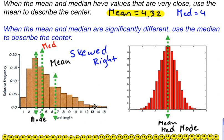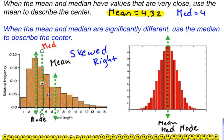If this was all flipped around, the mean would get pulled way over to the left if the tail was on the left. So when the mean and the median have values that are very close, that tells us our distribution is probably bell-shaped, and we should use the mean to describe the center. But if our mean and our median are different from each other, that means we're either skewed left or skewed right depending on which one is larger, and we should use the median to describe the center of our distribution.